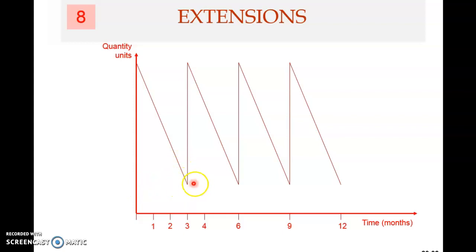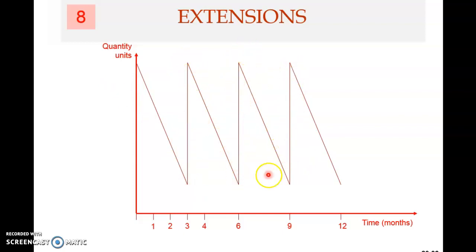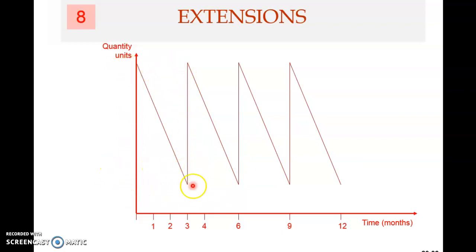Then, when it becomes zero, you reorder again the same quantity, and then you start selling. Once you order, you get the material immediately, so your inventory immediately goes back up. That is why it looks like saw teeth — it goes up and then gradually comes down, then you order and it goes up again. The distance between this point and this point is your order quantity. That is the basic EOQ model.